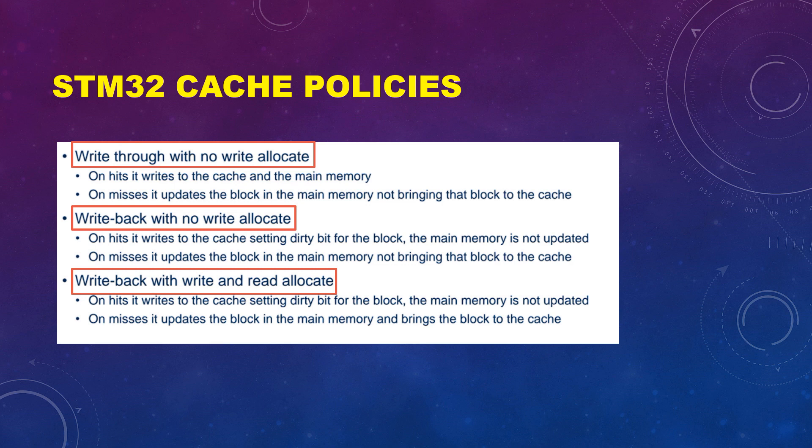Then there is write back with no write allocate. In case of a hit, the cache is written and the dirty bit is set — the main memory is not updated instantly, that's how write back works. In case of a miss, the data is updated in the memory, but that memory block will not be copied into the cache, since this is no write allocate.